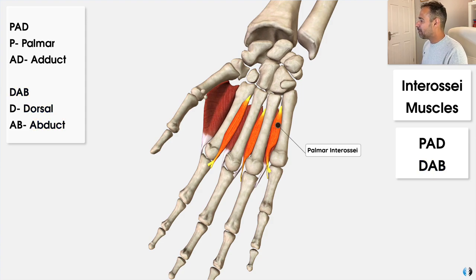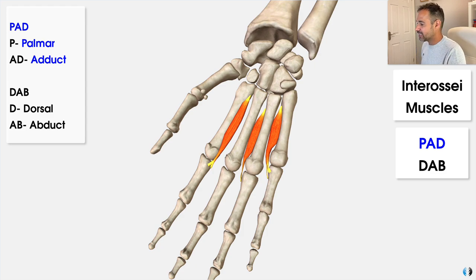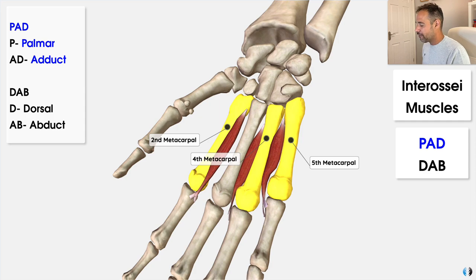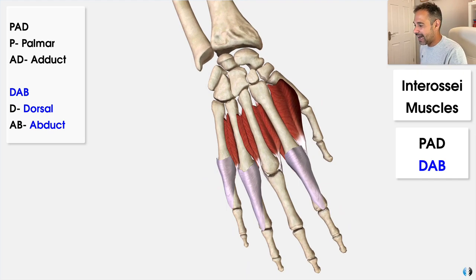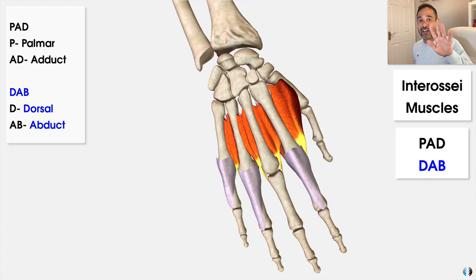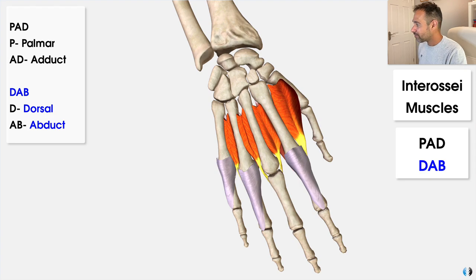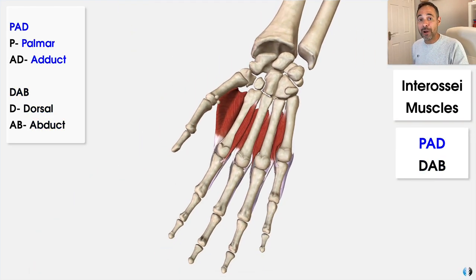The palmar interossei are responsible for adducting some of the key fingers — they're located between the second, fourth, and fifth digits, and they adduct the fingers towards the center of the hand. Then we have the dorsal interossei on the dorsal side of the hand, and they abduct — they abduct the fingers away from the center of the hand. So there you go: PAD, DAB — palmar adduct, dorsal abduct — for the interossei muscles.